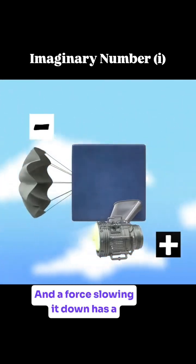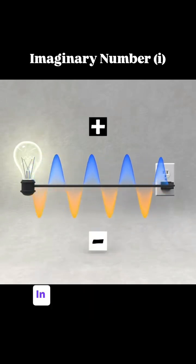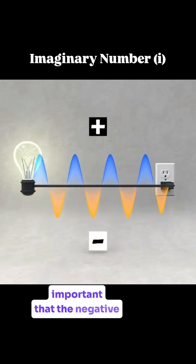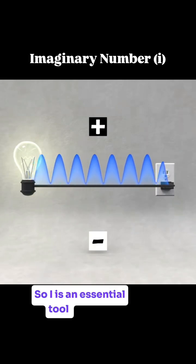If you look at movement, a force making something move faster has a positive effect, and a force slowing it down has a negative effect. Electrical currents can oscillate between positive and negative voltage. In these kinds of scenarios, it's important that the negative values don't get flipped to positive when multiplied together. So i is an essential tool to make calculations.